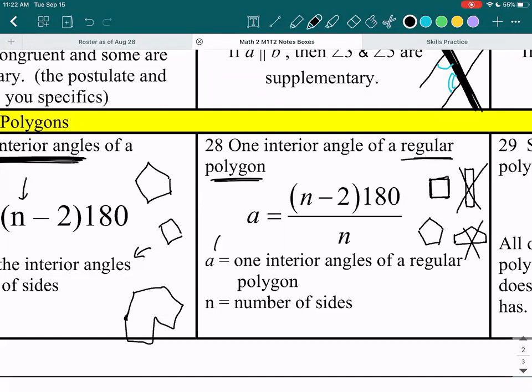Here's the formula. A stands for one interior angle of a regular polygon, so that's the a, here's the formula for it. And then we just have n being the number of sides, so the number of sides minus 2 times 180 divided by n.